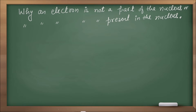The question is: why is an electron not a part of the nucleus, or why is an electron not present in the nucleus? This is explained by the Heisenberg Uncertainty Principle.